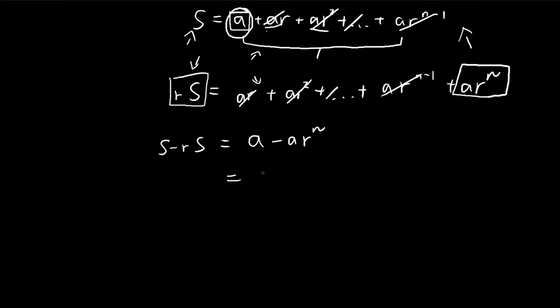We do a bit of factorization. At this point, I think it's easy enough. S is equal to A times 1 minus R to the power of n divided by 1 minus R. There we have it. This is our formula.